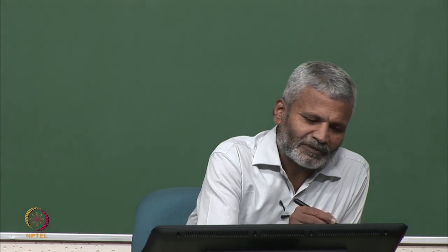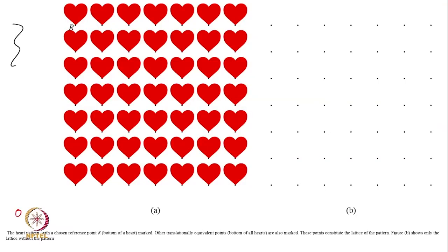Here we see a heart pattern and this is a periodically repeating pattern. Hearts are repeating in two directions: horizontal and vertical. Any linear combination of these two vectors, if you select it, will be repeating in that direction also. So if I see a heart at this vector in that direction, if I continue my journey I will keep seeing identical hearts in that direction, and not only that — I have to get a heart at the right location.